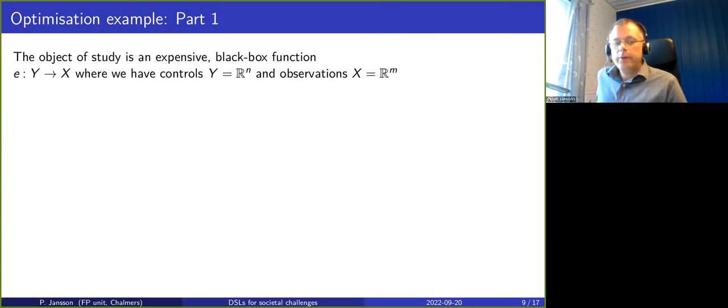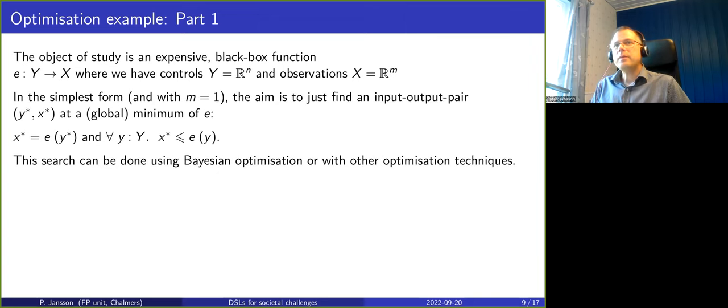Now for a little more concrete technical part. Both in the physics project I'm involved and also in this setting of agent-based modeling, I consider the object of study, for simplicity here, to be an expensive black box function e for experiment from some control space Y to some state space X. In the simplest form with just one real number output, the aim is just to find an input-output pair at a global minimum of e.